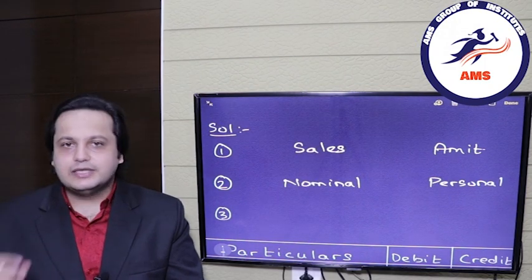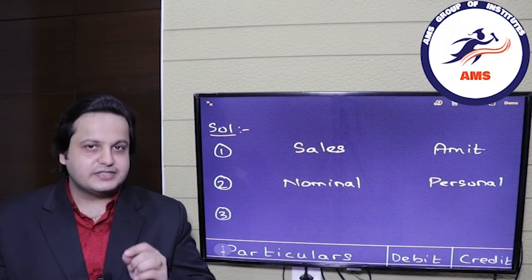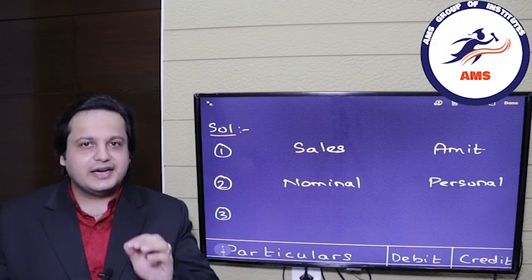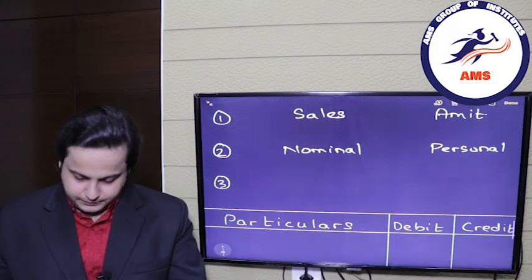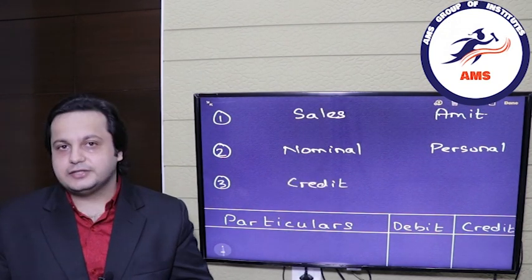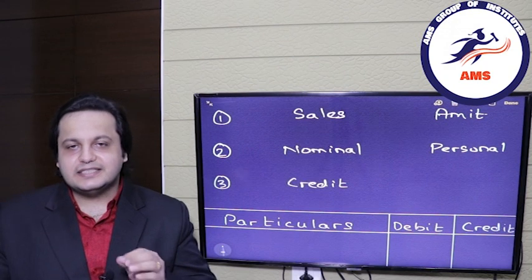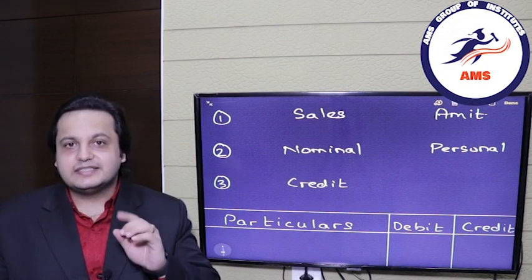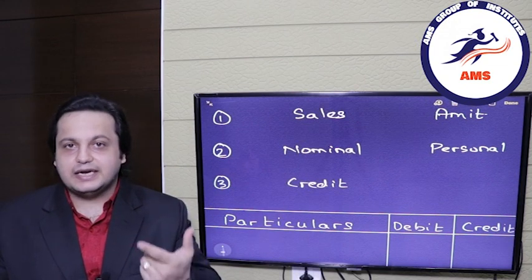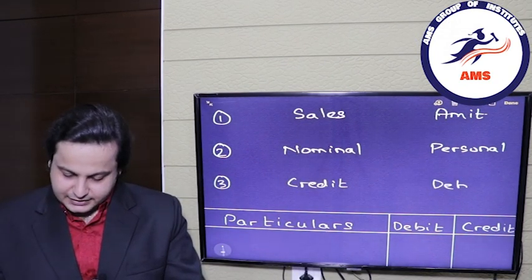Step three — apply the golden rules. The nominal rule is: debit all expenses and losses, credit all incomes and gains. Sales is our income, so we will credit the sales account. For Amit, the personal rule is: debit the receiver and credit the giver. Amit is receiving the goods, so Amit is the receiver and we will debit the Amit account.